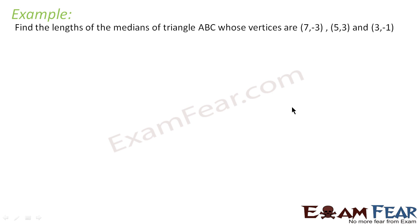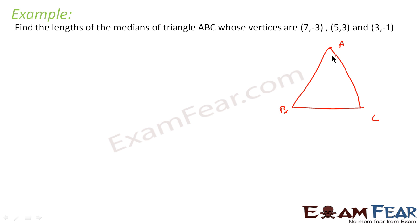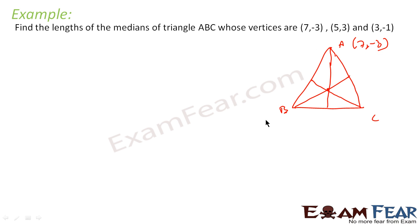Find the length of the medians in the triangle whose vertices are (7, -3), (5, 3), and (3, -1). This is a good question. Let's suppose this is triangle ABC. We have three medians meeting at a point, and we need to find the length of each median.